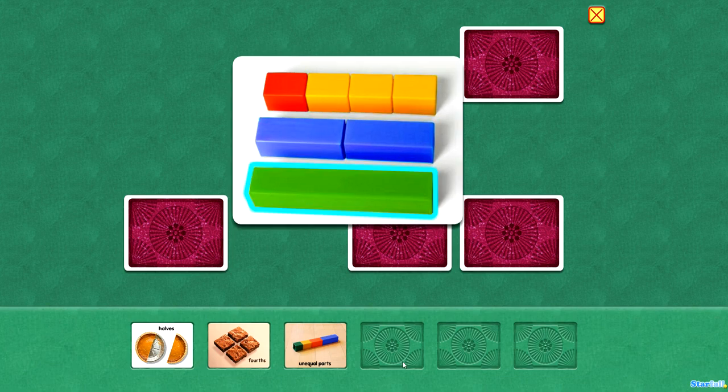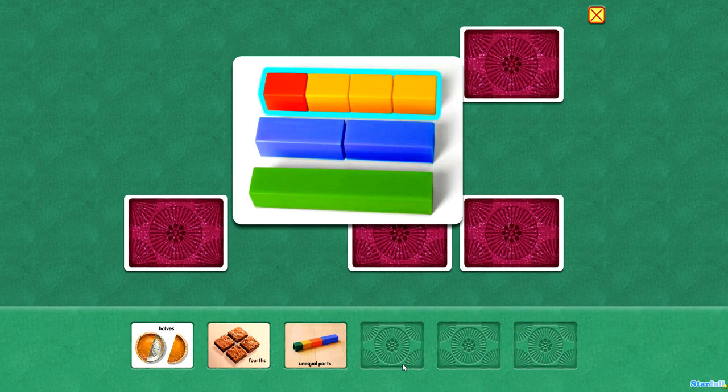One whole, two equal parts, halves. Four equal parts, fourths. Look, three-fourths of the length is yellow, and one-fourth is red.